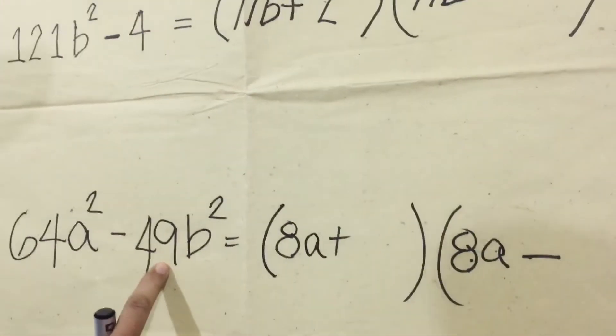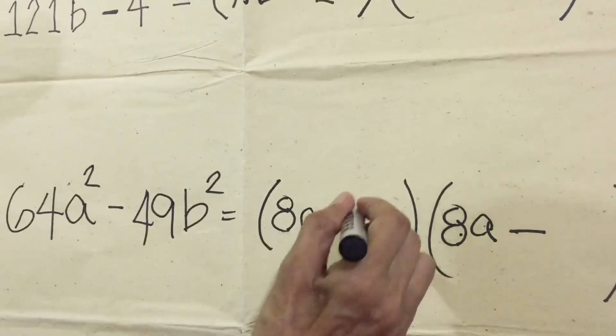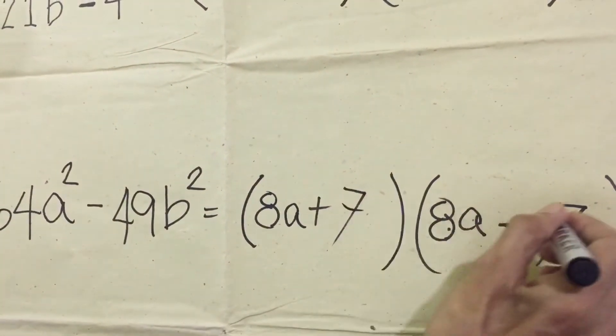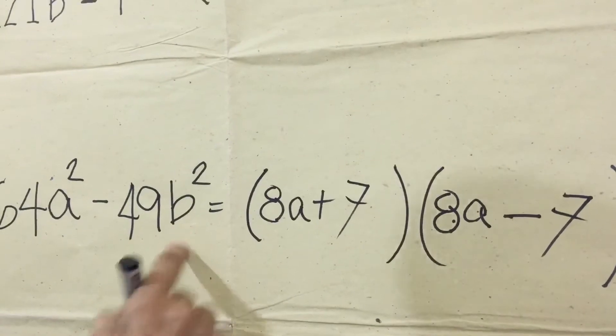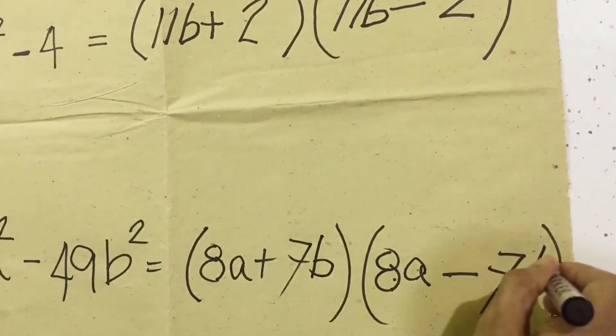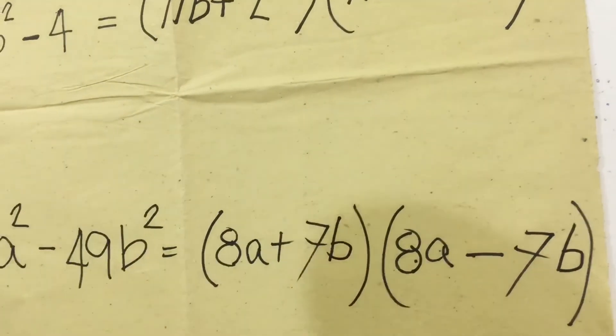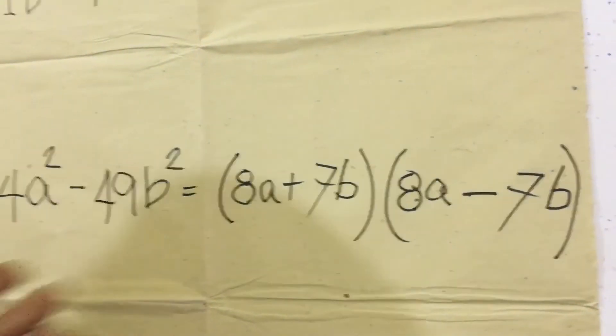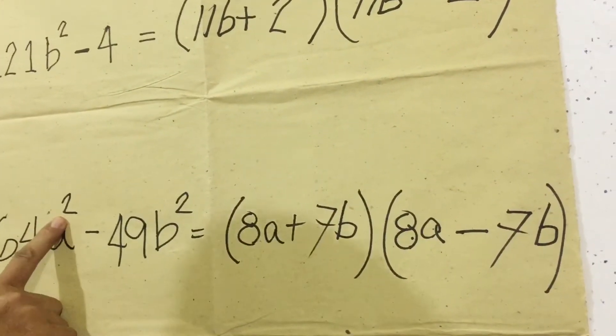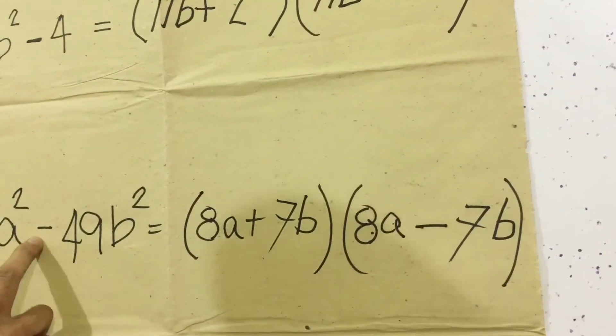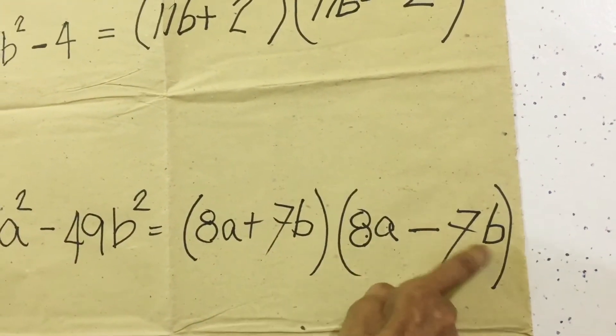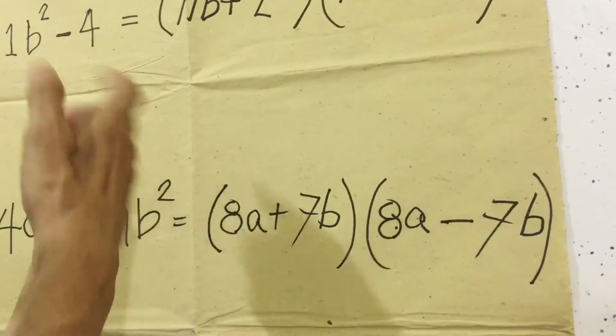Then for 49, the factor of 49 is 7 times 7. Then for B, so B-squared is also B here. B times B equals B-squared. And check again. 8A times 8A equals 64A-squared. Here, so positive times negative equals negative. Then 7B times 7B equals 49B-squared.